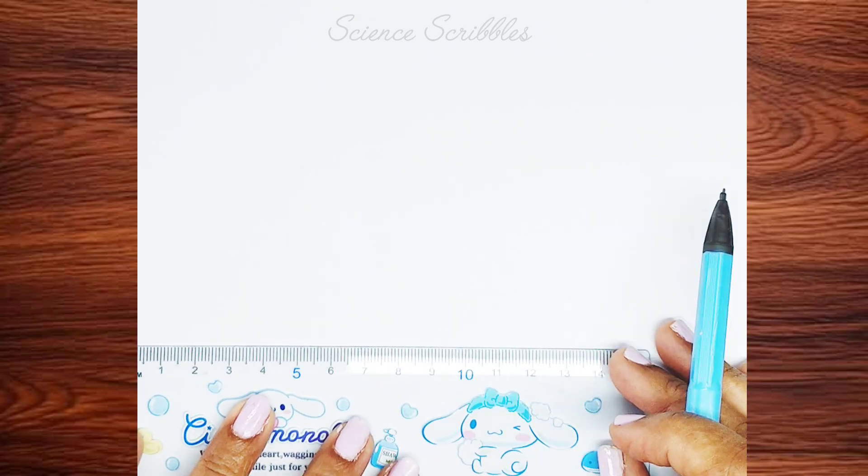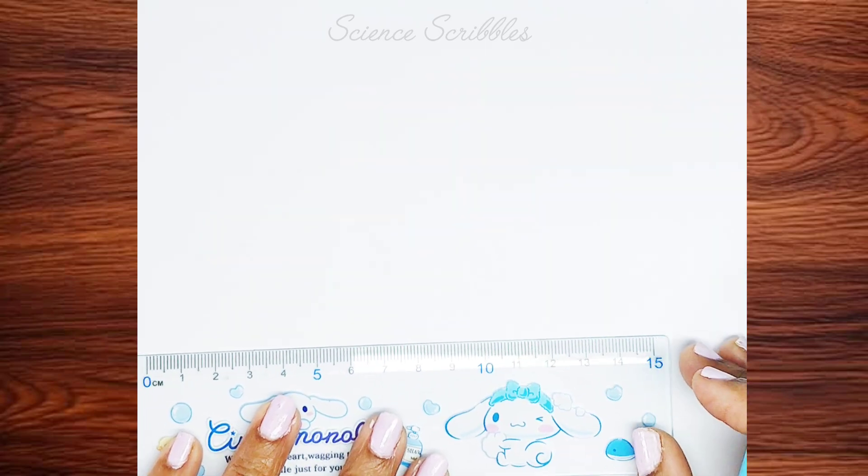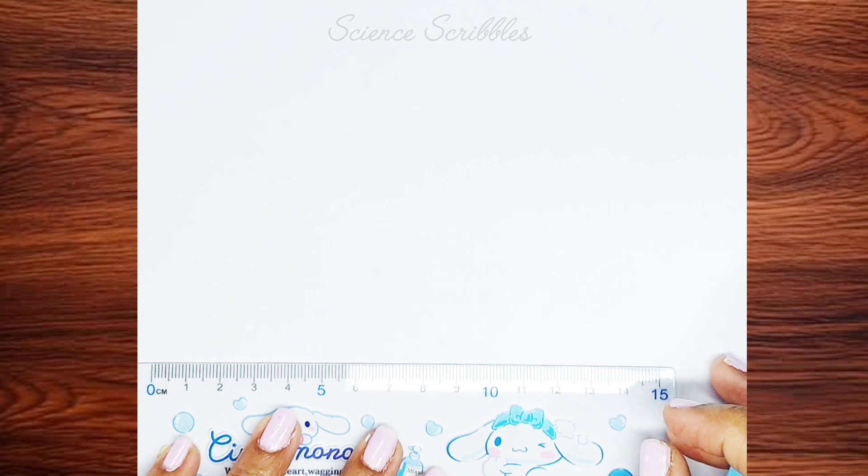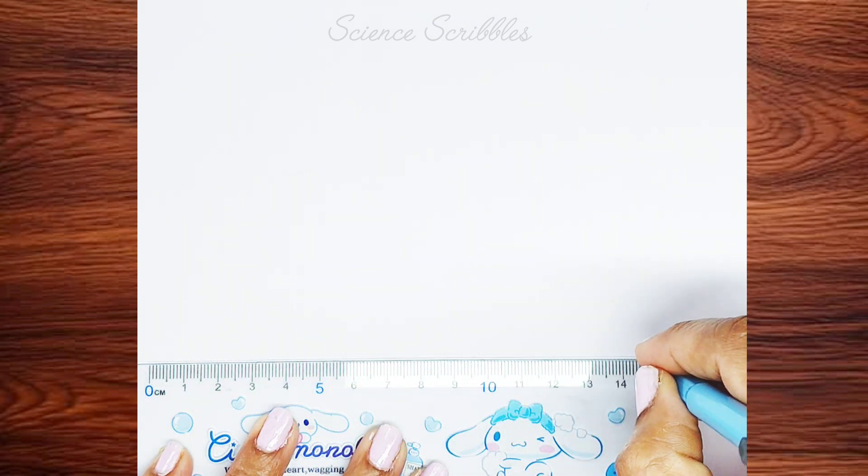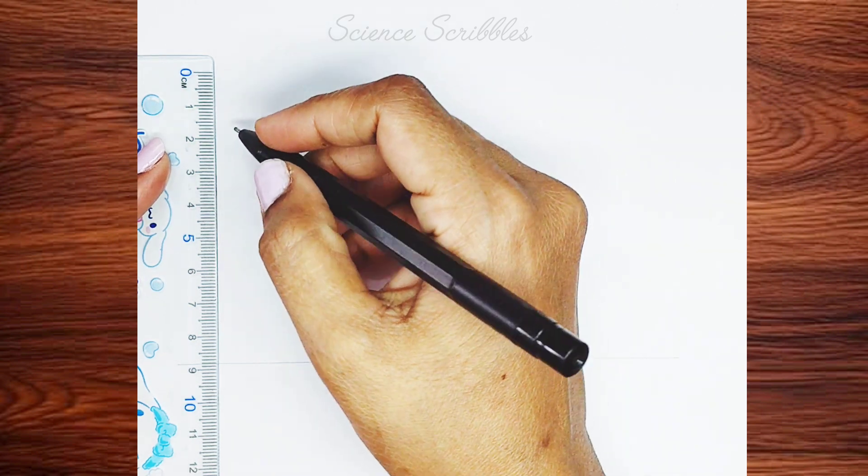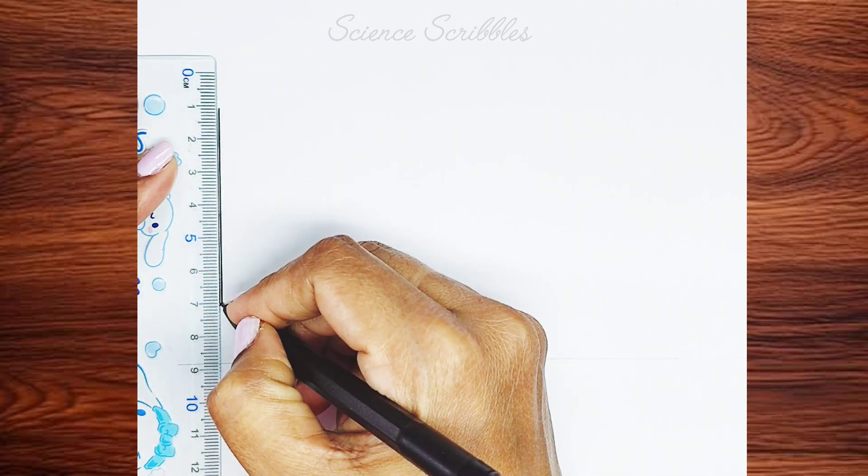Hi friends, let's begin drawing the apparatus for distillation, specifically for water distillation. Before starting any diagram, always draw a horizontal line. This ensures that the entire apparatus is aligned in a single straight line.